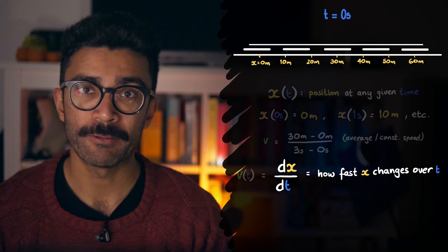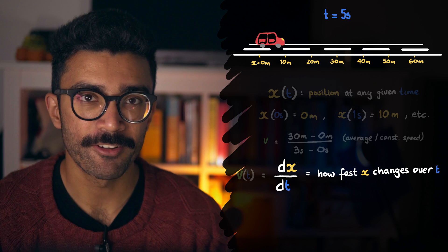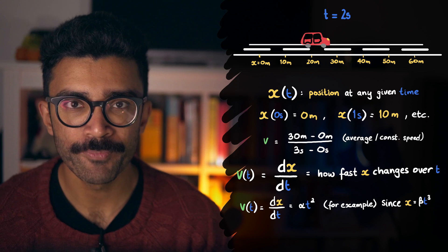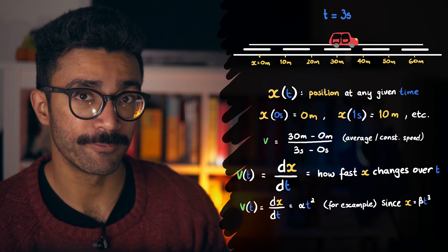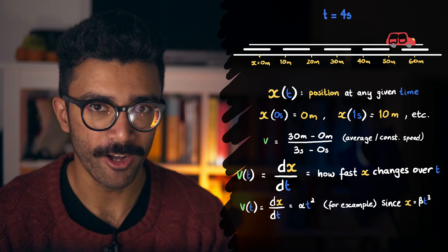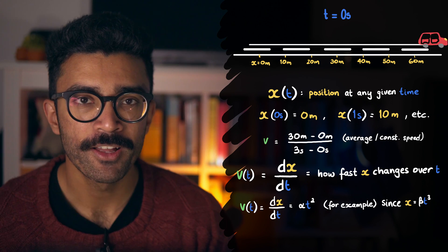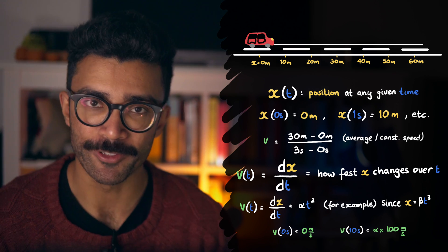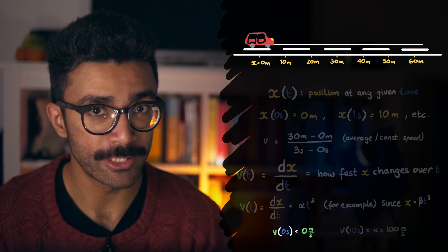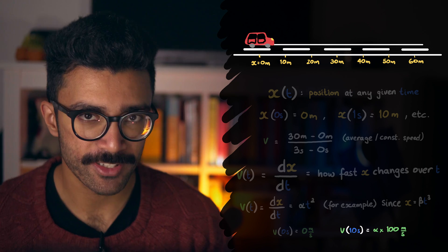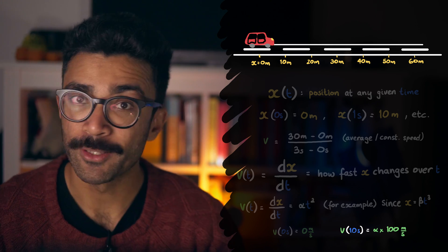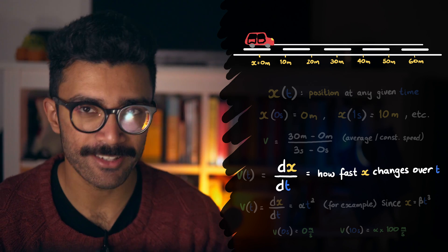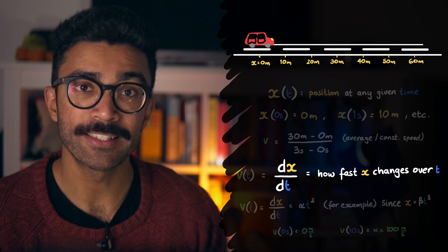For example, if the car accelerates or speeds up over time, then our value of dx by dt may look a bit like this: alpha times t squared, where alpha is just some constant value. If we want to work out the velocity of the car at any given time, we simply plug in the value of the time we're looking at. At the beginning, the car moves slowly, as shown by the small value of t squared. But then it gets faster and faster as time progresses. Anyway, the point is that dx by dt shows us how the quantity x changes with respect to the quantity t.